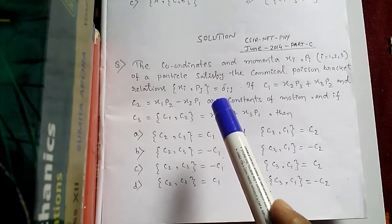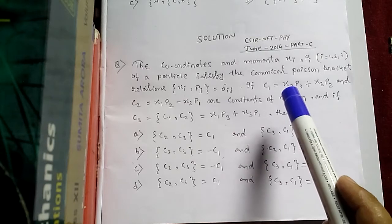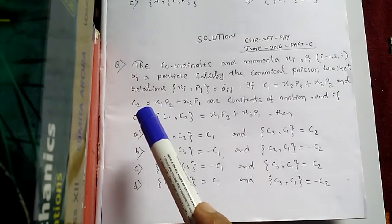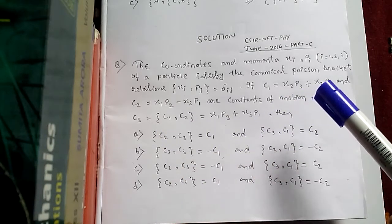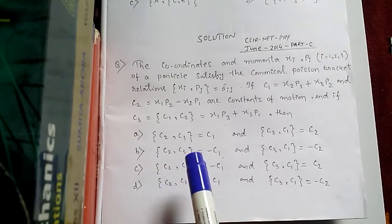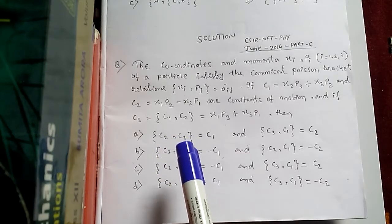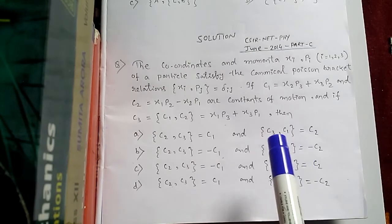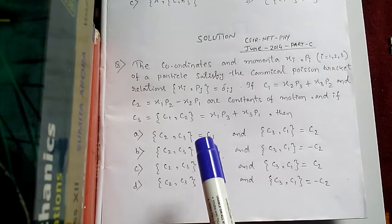Note that this relation has no use in this problem. We have been given the function C1 as a function of positions and momenta, similarly C2 is a function of positions and momenta, and C3 is a function of positions and momenta. So we have three functions and we have been asked to find the Poisson bracket of C2 and C3, and also the Poisson bracket of C3 and C1, with respect to x_i and p_i.